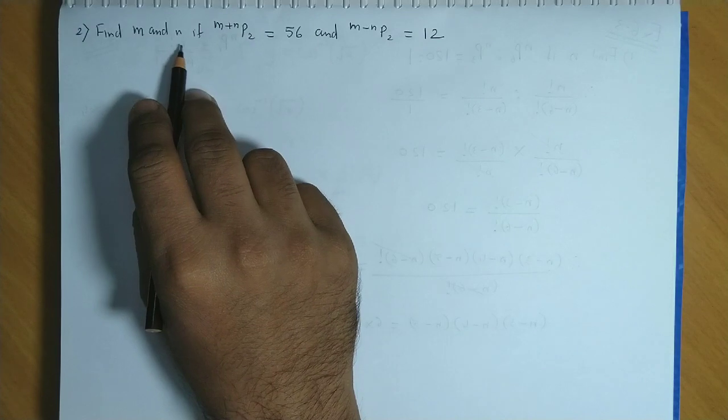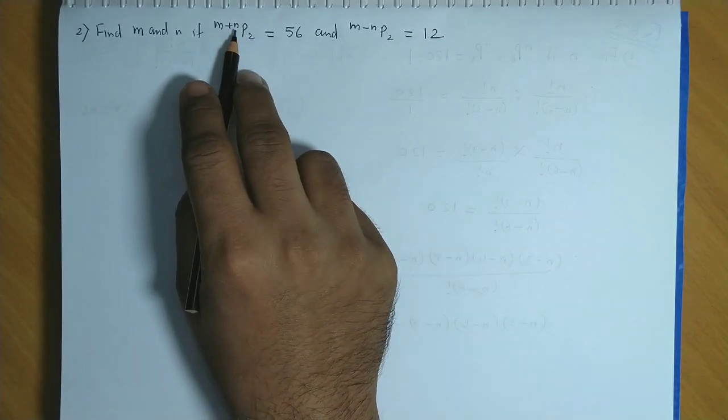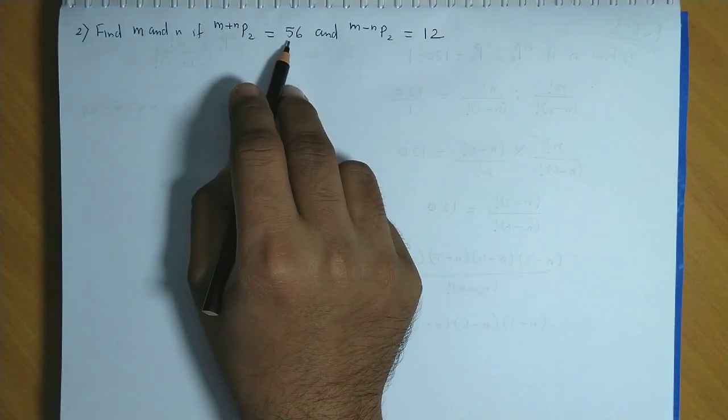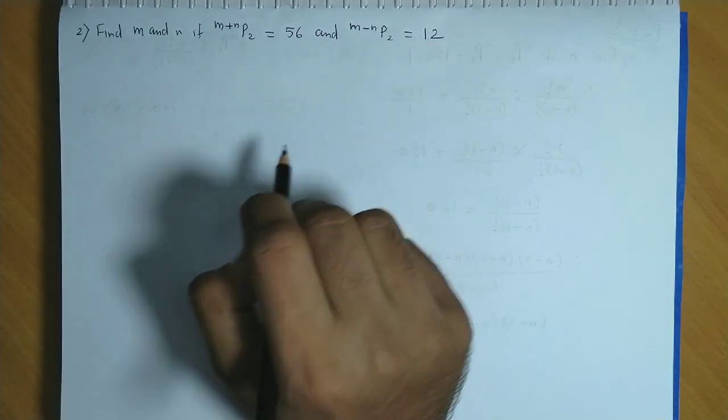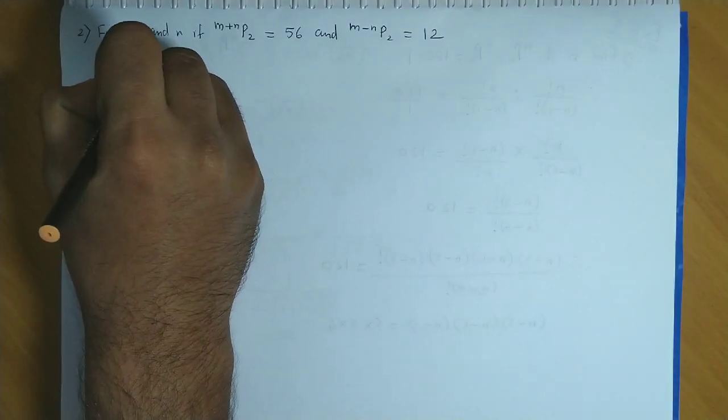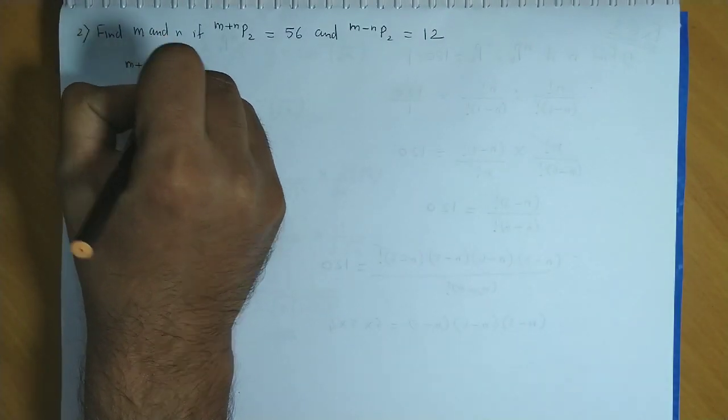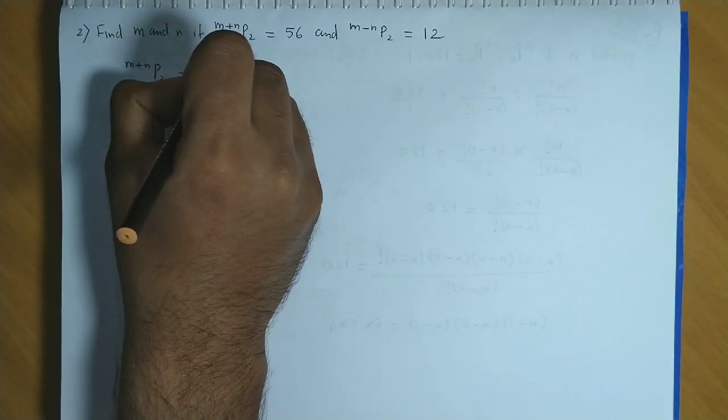The question is: find m and n if m plus n P2 equals 56 and m minus n P2 is equal to 12. So we consider m plus n P2 equals 56.